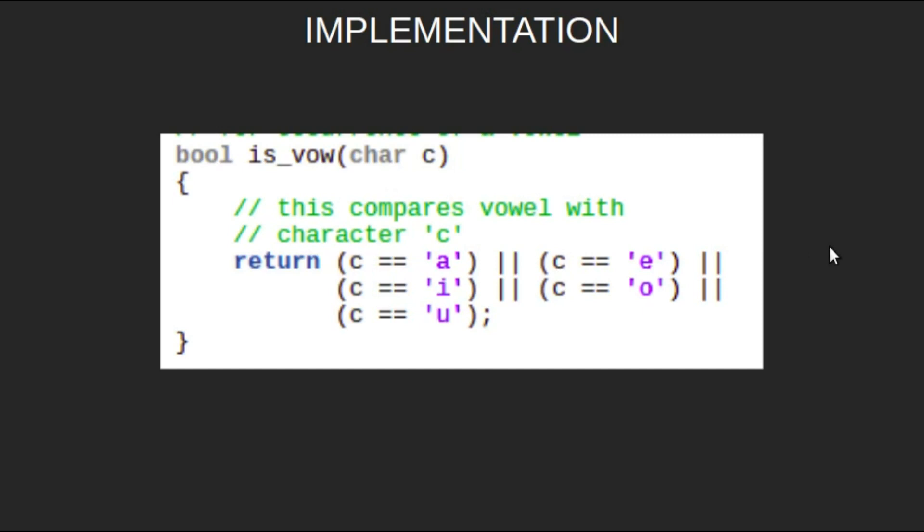This is the implementation. First we will make a method called isVowel which takes a char as input and checks if it is a vowel. It returns true only if the char is A, E, I, O, or U.